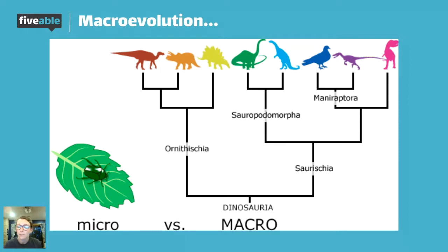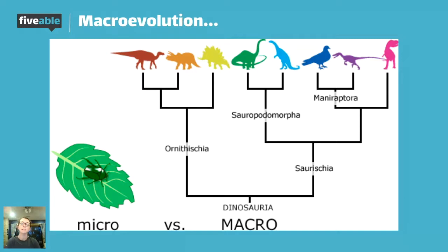A really common misconception is that humans evolved from monkeys. That's not true. If we evolved from monkeys, monkeys would no longer be here because they would have all evolved into humans. We did not evolve from monkeys, but we have a very recent common ancestor with monkeys. We diverged our separate ways into separate species from that common ancestor, which is why we share so many traits and genes — like 99% of our DNA with chimpanzees. That's what we're talking about with macroevolution.